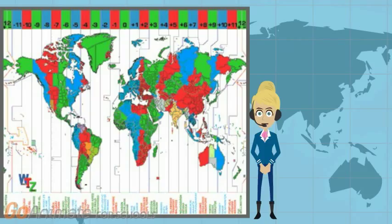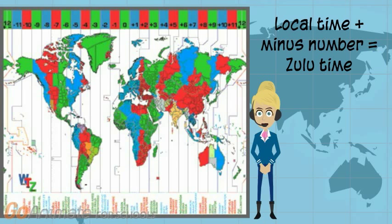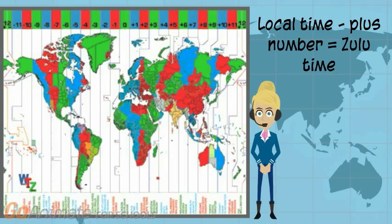So we have learned how to convert Zulu time into our local time. But what if we know our local time and want to find out what Zulu time is? We can still use the same chart, but we must use the chart in reverse. To find Zulu time when we are in a minus time zone, we add the minus number to our local time. To find Zulu time when we are in a plus time zone, we subtract the plus number from our local time.